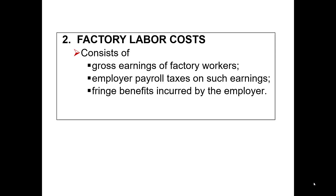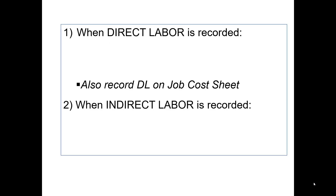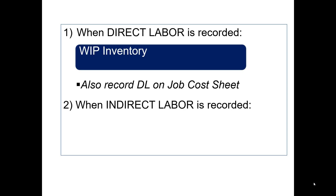Next up, factory labor costs. This will be the gross earnings, fringe benefits, all of the payroll taxes — anything required to pay factory labor. Once again, you will need to distinguish between direct and indirect labor. For direct labor, you will debit work in process inventory and credit cash or wages payable.